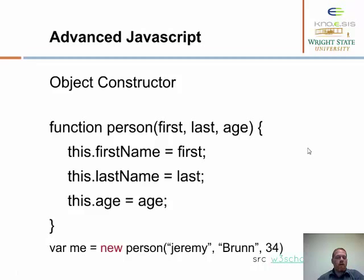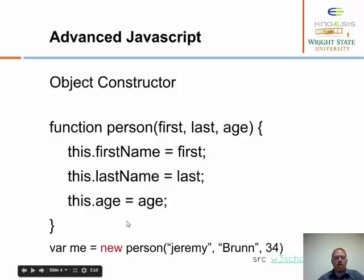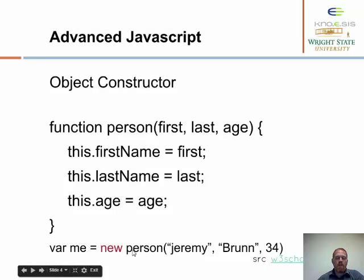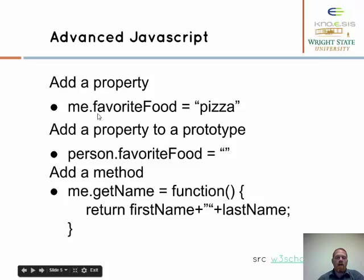So this is an object constructor — we're using the function to create an object. We're going to pass in these primitives, so the object will have properties: first name, last name, and age. We're going to set those here. You call 'new' to create a new object. Now you can add new properties on the fly. Here we created this person object called 'me', and I'm going to add a property, 'favorite food', as 'pizza'.